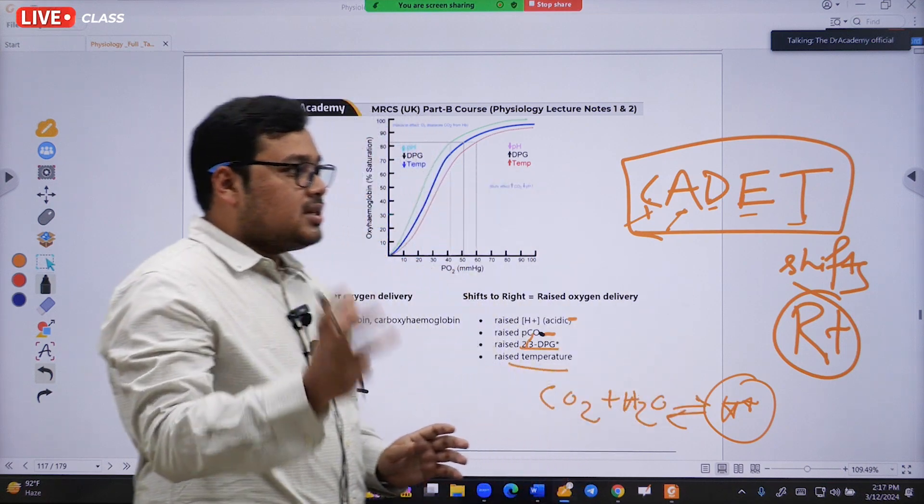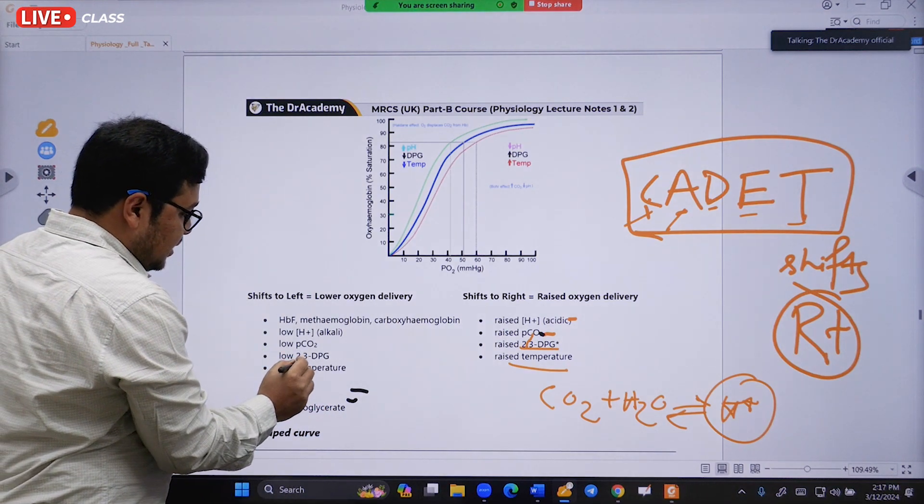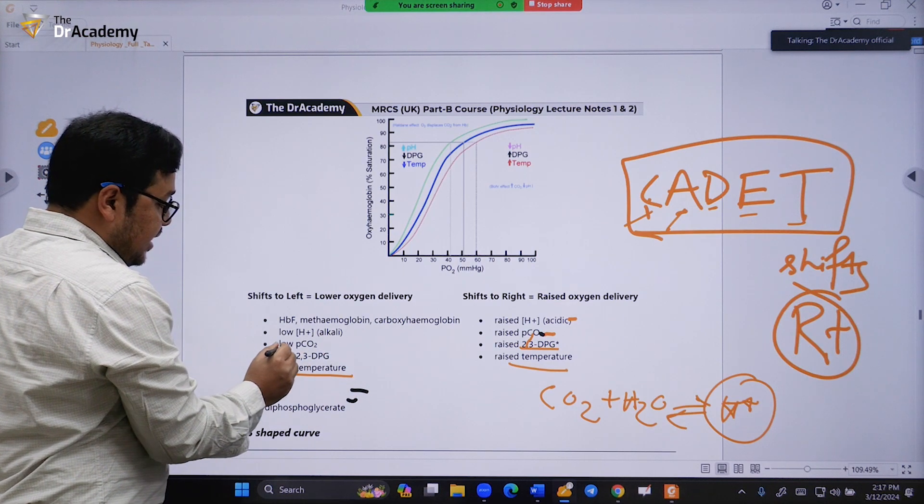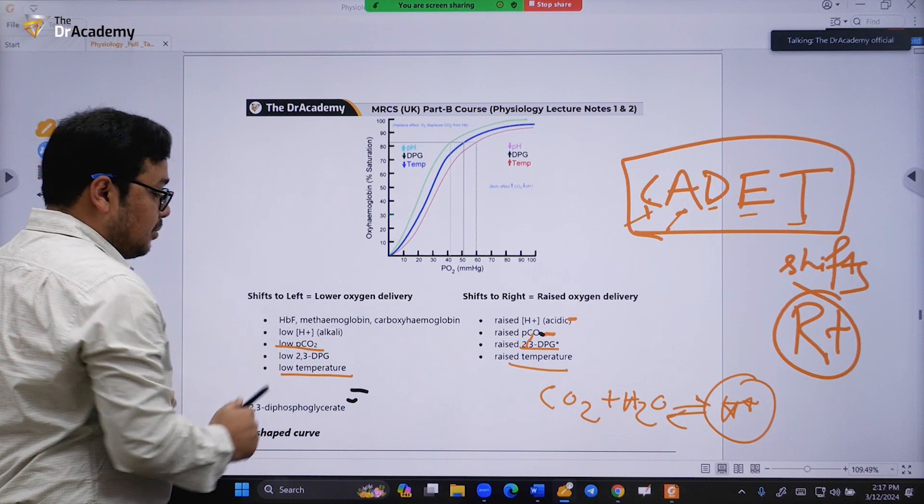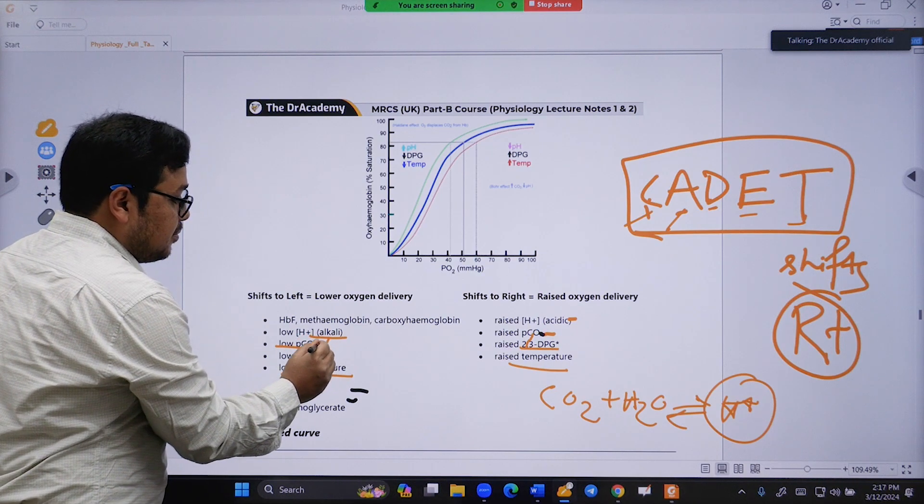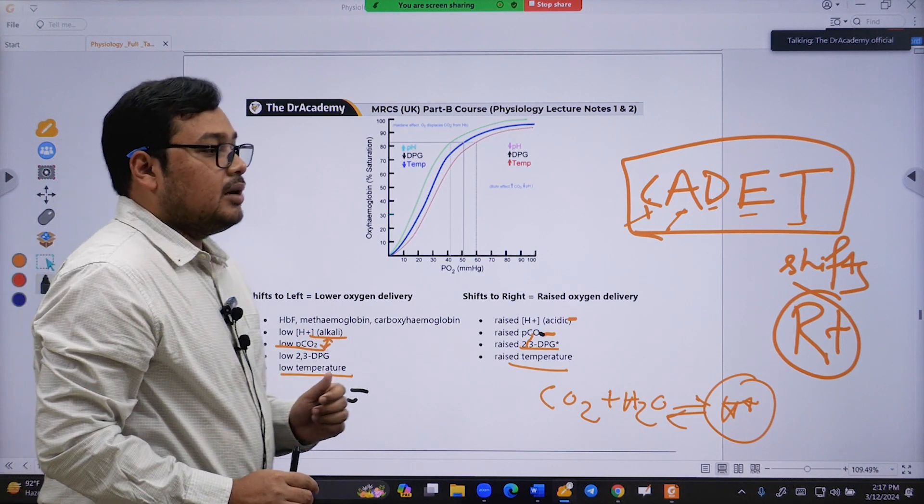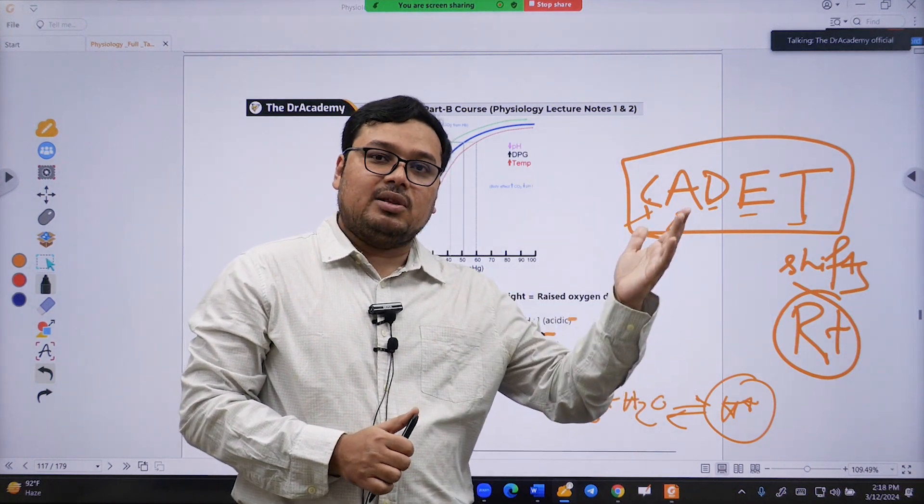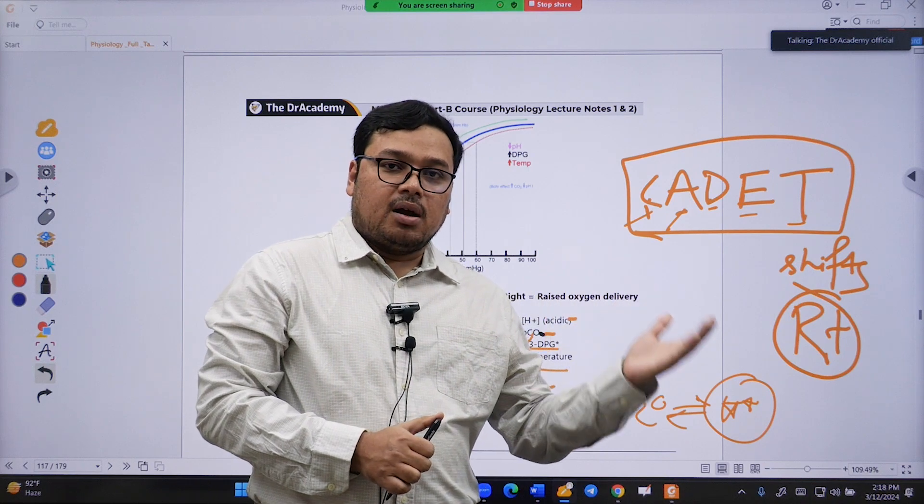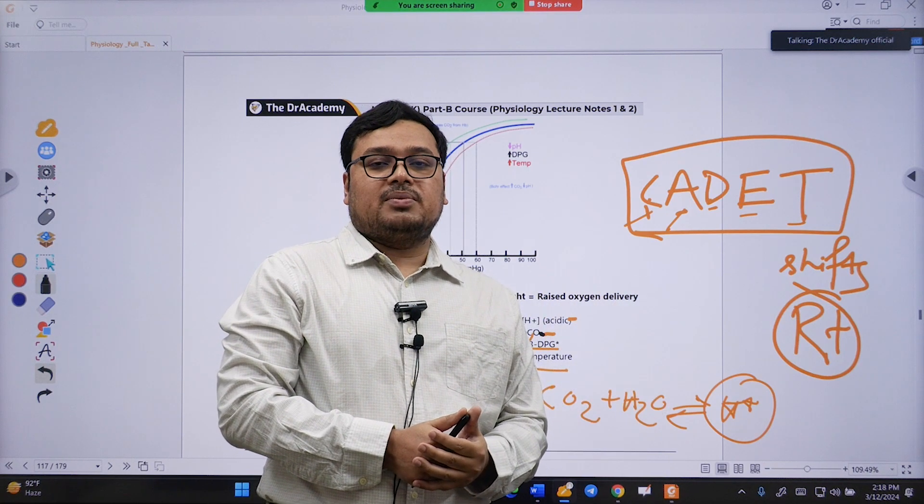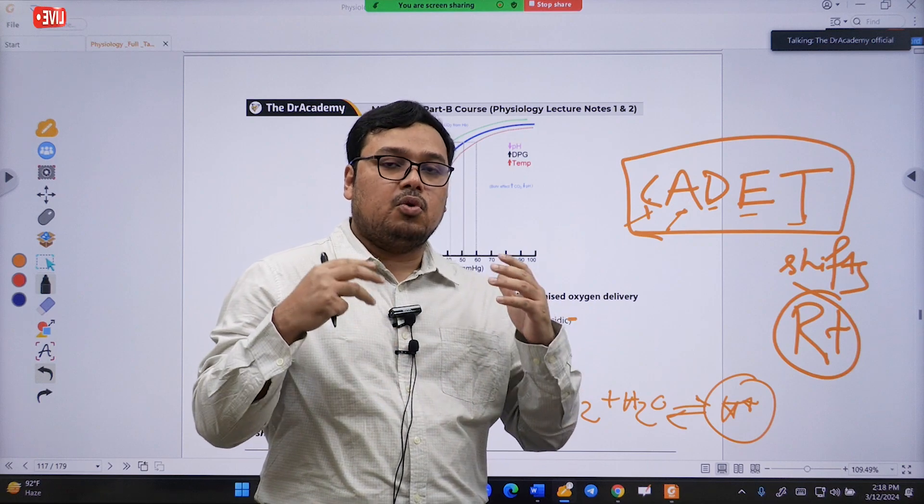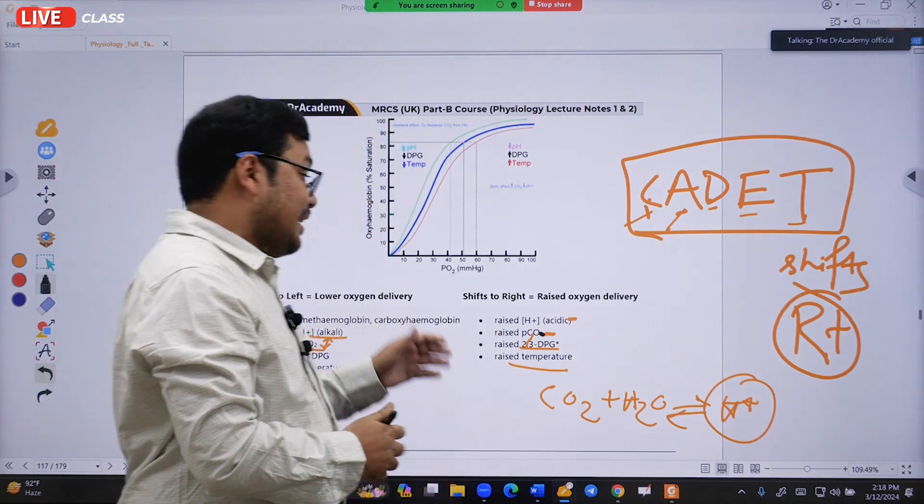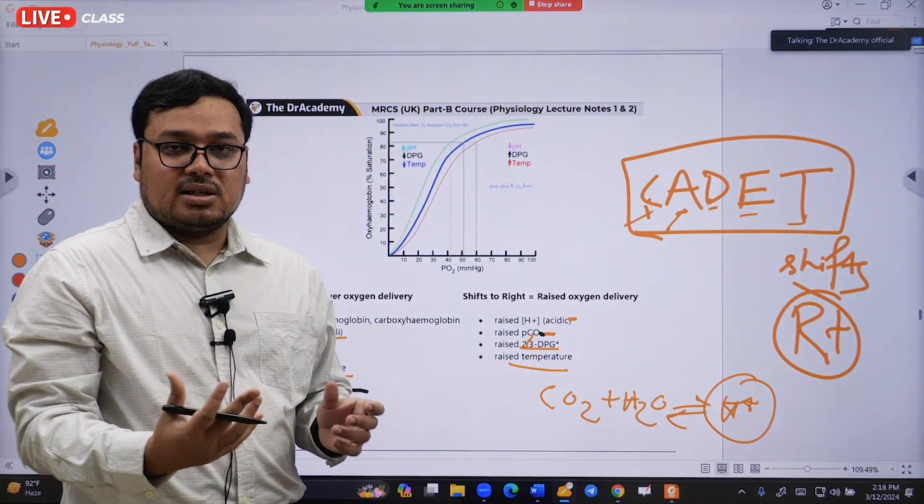For exam purposes, most of the time they will give high altitude scenarios. High altitude means low temperature and low partial pressure of carbon dioxide, or alkaline - both are the same thing. They'll give you a scenario of someone on a mountain or hiking. What happens to the oxygen dissociation curve? When the patient is hiking, they will have a higher respiratory rate. More respiratory rate means more carbon dioxide is getting out of the body, so partial pressure of carbon dioxide will be lowered.